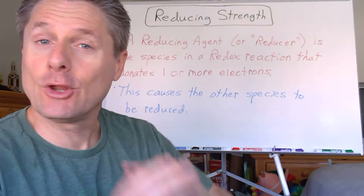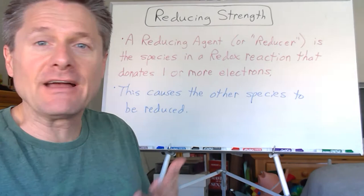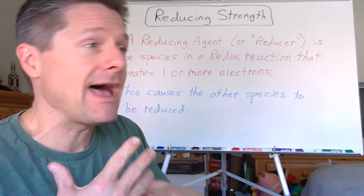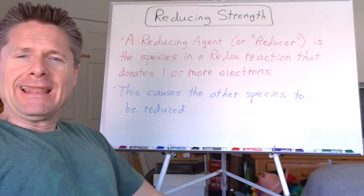Good morning, team. Chemistry coach coming at you again. Still looking at all these different properties and how electron configurations and electron shielding affect them — are there trends on the periodic table? So we've looked at atomic size, ionization energy, electron affinity, a whole bunch of good stuff, magnetic properties.